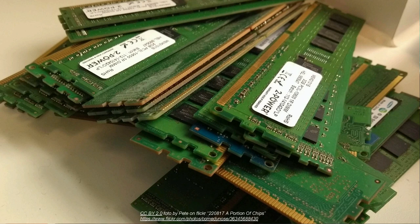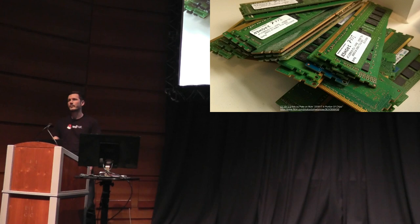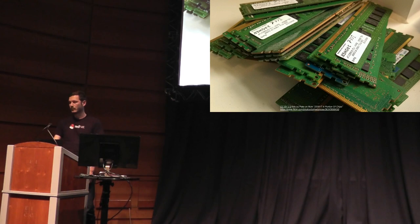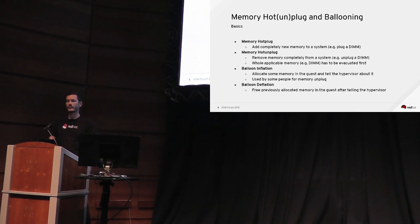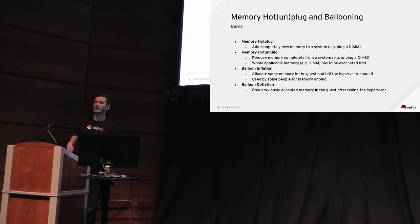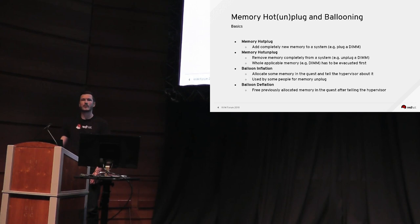In a virtual environment we usually don't really deal with DIMMs — we have abstractions for that — but still we are able to hot plug virtual DIMMs into certain machine types, for example x86. We also have this concept of ballooning invented for virtualized environments. Memory hot plug means adding completely new memory to a system: you plug a DIMM and the OS starts using it. Memory hot unplug means removing memory completely, which requires the OS to evacuate any memory previously used on that DIMM.